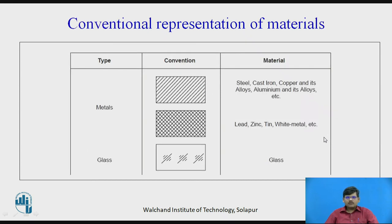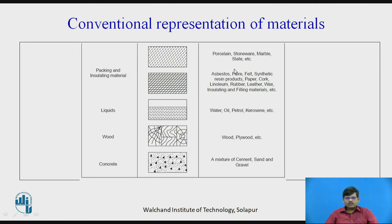For conventional representation of engineering materials: for metals like steel and cast iron, we use a standard hatching line pattern. For lead, zinc and tin, a different convention applies. For glass, there is a specific convention. For packaging and insulating materials such as porcelain, another convention is used. Asbestos and other fiber materials have their own convention. For liquids — water, oil, kerosene, petroleum — a specific convention is used. Wood and concrete (a mixture of cement, sand and gravel) each have their own conventions. These are the popularly used engineering materials and their BIS conventions.